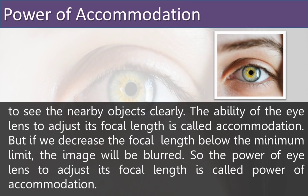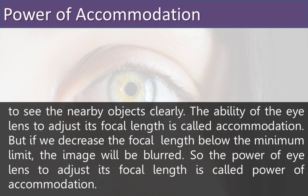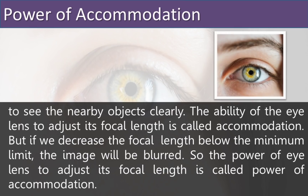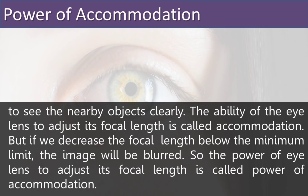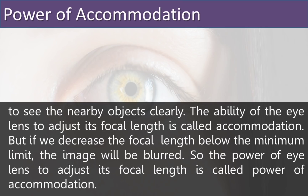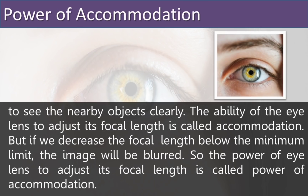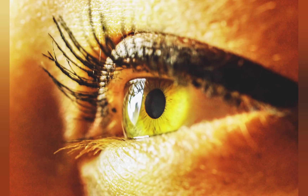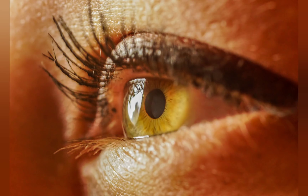The ability of the lens to adjust its focal length is called accommodation. If the focal length decreases below the minimum limit, the image will be blurred. The power of the lens to adjust its focal length is called the power of accommodation — that means the distance at which we can see things clearly.